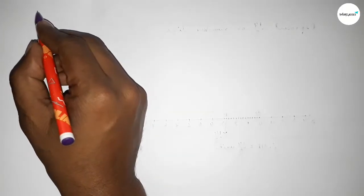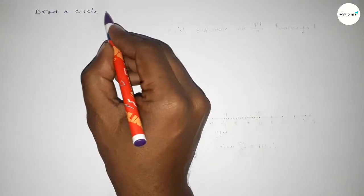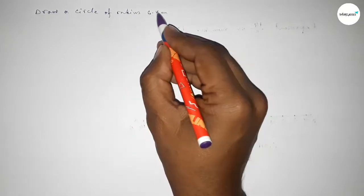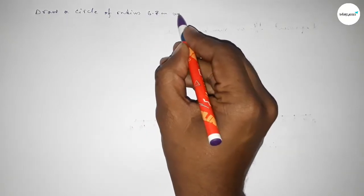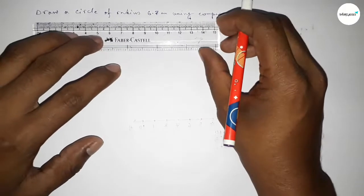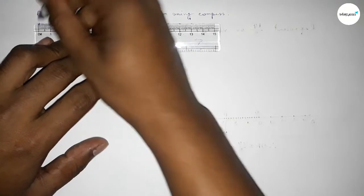Hi everyone, welcome to SI Share Classes. Today in this video we have to draw a circle of radius 6.7 centimeters using a compass. Let's start the video. First of all, drawing here the line 6.7 centimeters.